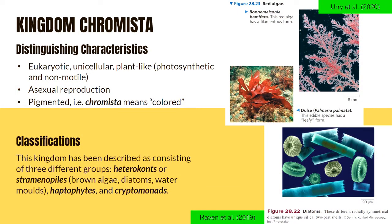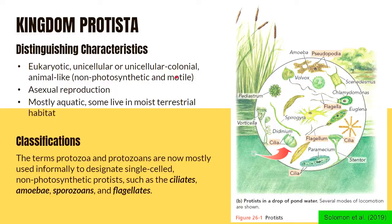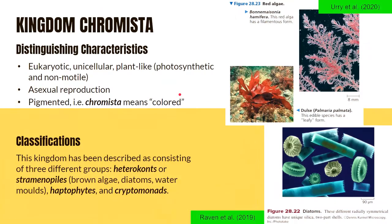Next would be Kingdom Chromista, and these are its distinguishing characteristics. They are still eukaryotic and unicellular, but compared to Kingdom Protista, organisms under this kingdom are mostly plant-like because they are photosynthetic and non-motile. Remember that protists are mostly animal-like because they are non-photosynthetic and motile — they can move around just like animals. While Kingdom Chromista organisms are mostly plant-like because they can perform photosynthesis and have no means for locomotion.